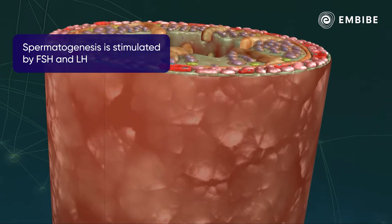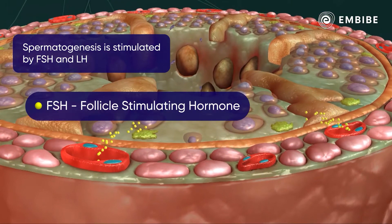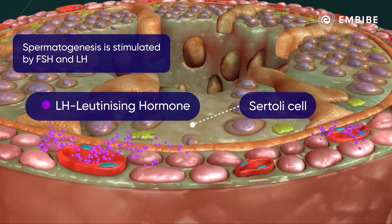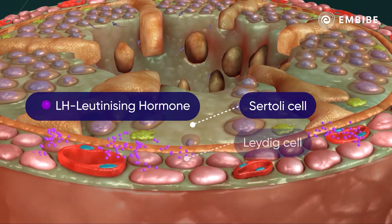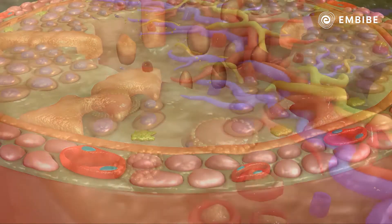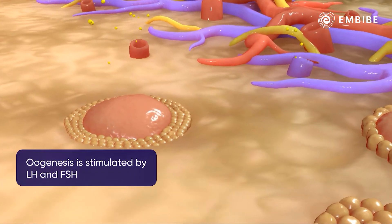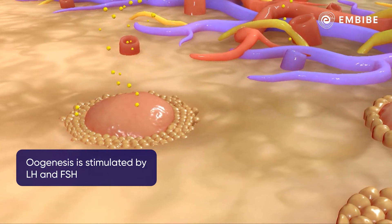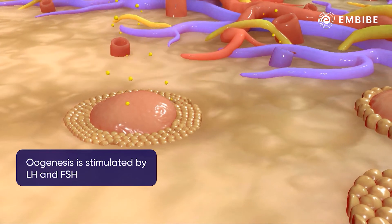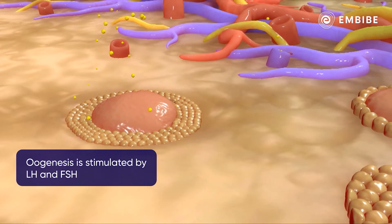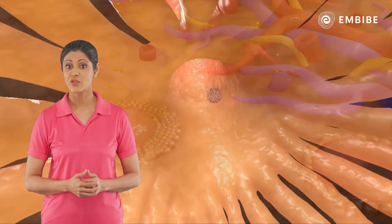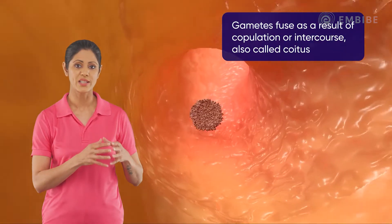Spermatogenesis is stimulated by both follicle stimulating hormone (FSH) and luteinizing hormone (LH), by acting on Sertoli cells and Leydig cells respectively. Oogenesis is also stimulated by both FSH and LH, where LH also plays a role in ovulation.